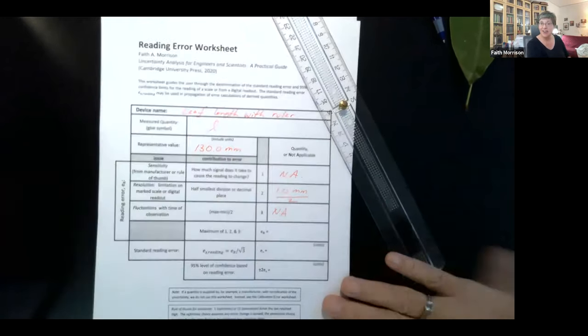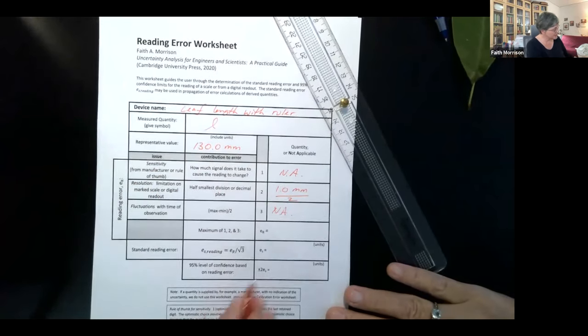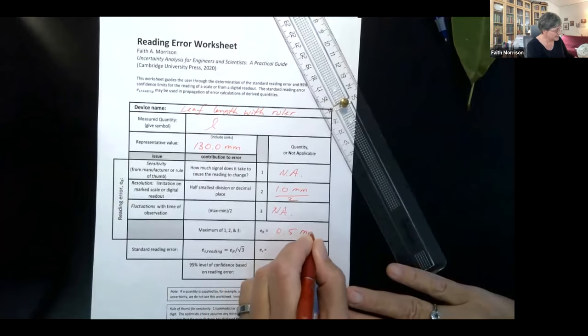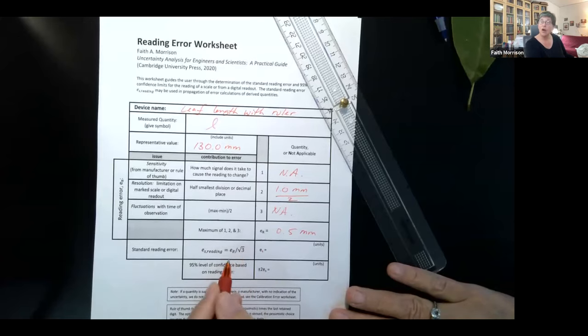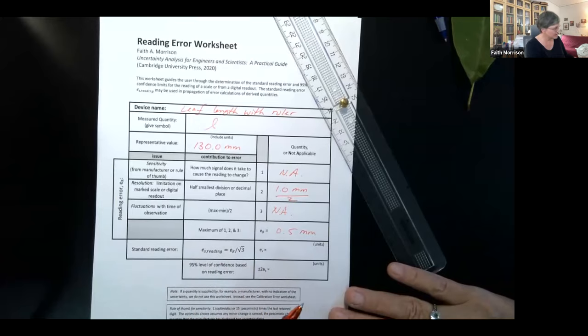So as I do explain these all in the book, but again, only the biggest of these three is important. So 0.5 millimeters is the raw reading error. And we can work out what the impact of this reading error is. And it's related to a statistical distribution called the rectangular distribution. And it's related to the standard deviation of the rectangular distribution.